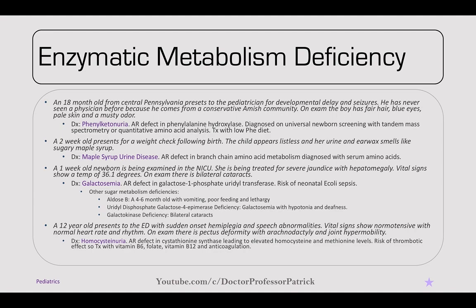Moving into enzymatic metabolism deficiencies, an 18-year-old from central Pennsylvania presents for developmental delay and seizures. He's never seen a physician and comes from a conservative Amish community. On exam, the boy has fair hair, blue eyes, pale skin, and a musty odor — classic for PKU, or phenylketonuria. It's an autosomal recessive defect in phenylalanine hydroxylase, diagnosed on universal newborn screening using tandem mass spec or quantitative amino acid analysis. Treatment is a low-phenylalanine diet to prevent mental retardation.